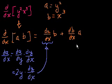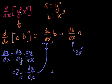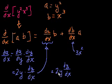We haven't explicitly defined y in terms of x, so we just leave it as dy/dx. And the derivative of b with respect to x — since b equals x to the third — is straightforwardly 3x squared, no chain rule needed. So the final answer: the derivative with respect to x of y squared times x to the third equals 2y dy/dx times x to the third, plus 3x squared times y squared.